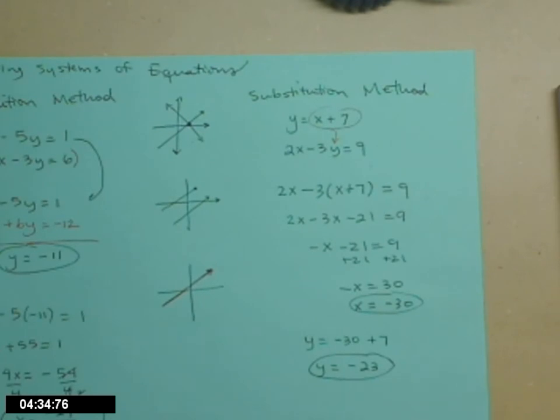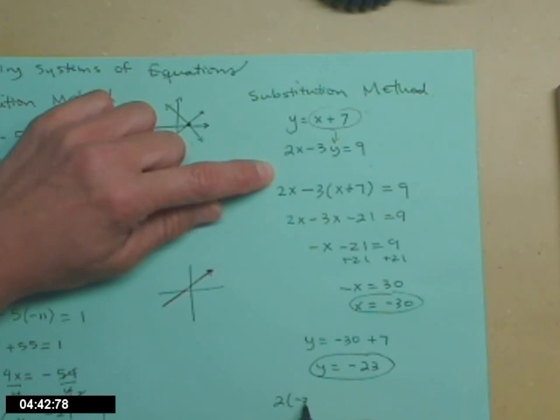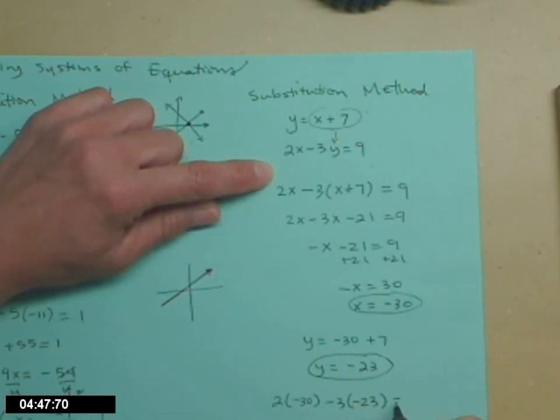Let's check that in that second equation, because this is the point that's supposed to work for both lines. So let's make sure it works in the second one. So 2 times x, x is negative 30, minus 3 times y, negative 23, should equal 9. Does it?